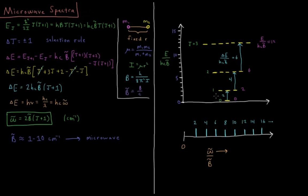Degeneracy of each level is 2j plus 1, one level at j equals 0, 3 at j equals 1, 5, 7, 9, etc.